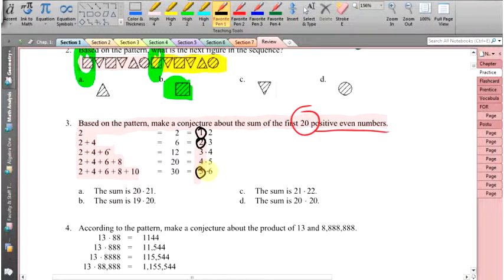And to figure out the sum, it looks like you just take the number of numbers and you times it by the next one in the list. So if I want 20, it's going to be 20 times 21 which is right there. Let's look at number 4.